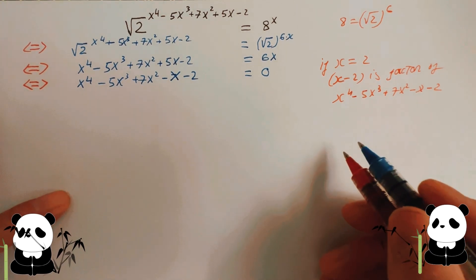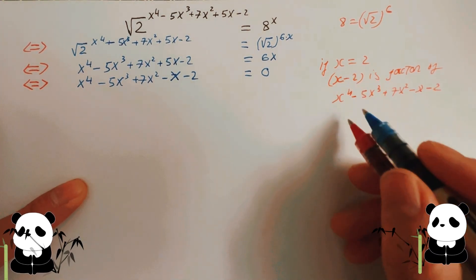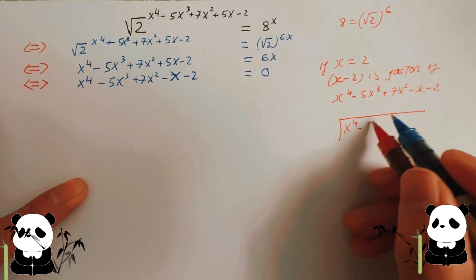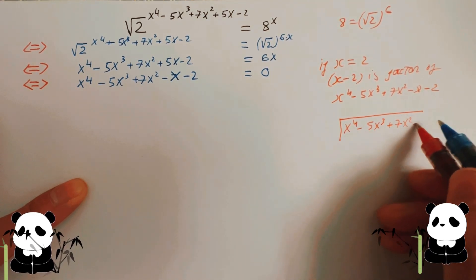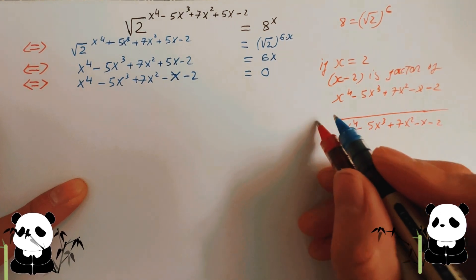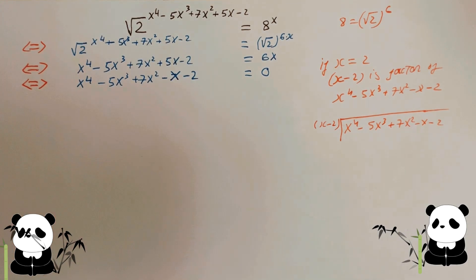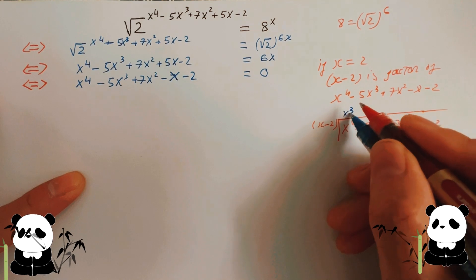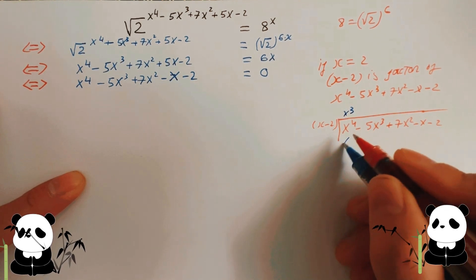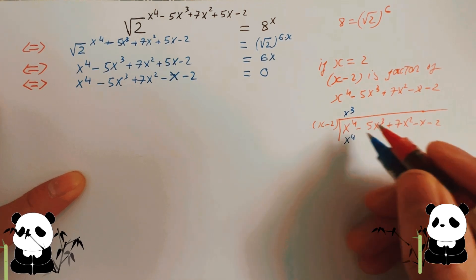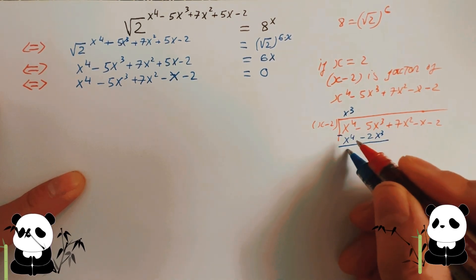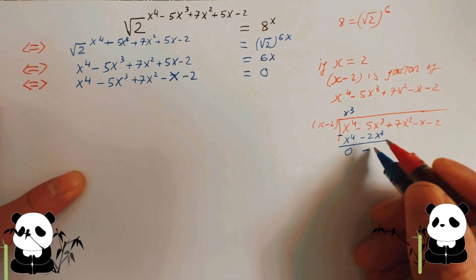Now divide that function by x take away two. You get x to the four, take away five x cubed, plus seven x squared, take away two, divided by x take away two. Because we have x to the four, put x cubed here. x cubed times x equals x to the four, and x cubed times negative two gives negative two x cubed. Take away each together that equals zero, and we get negative three x cubed.